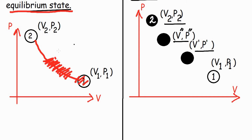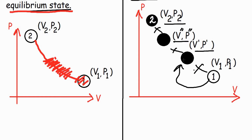For a reversible process, we can draw a continuous line in the PV diagram. But for an irreversible process, I can only draw discrete points, because there are no intermediate states between 1 and V'P' — I went directly from 1 to the intermediate step V'P', and then to V2P2. So I cannot draw a line. But in the reversible PV diagram, I can easily draw a line from 1 to 2 because all infinite intermediate steps are present.